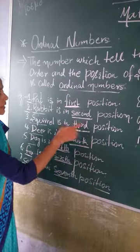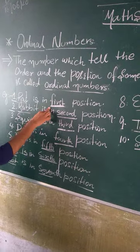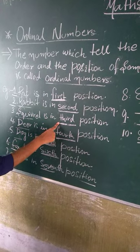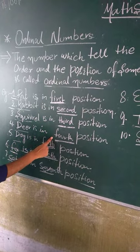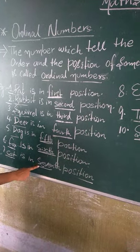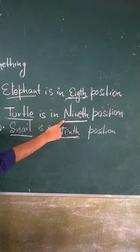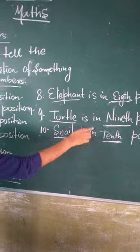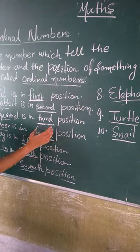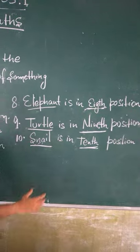In Ordinal Number, we write this number name: 1st, 2nd, 3rd, 4th, 5th, 6th, 7th, 8th, 9th, 10th. In the last word of the number name, we put the TH of the number name.